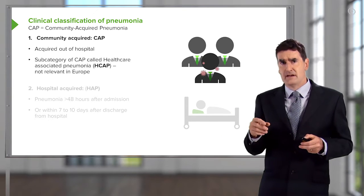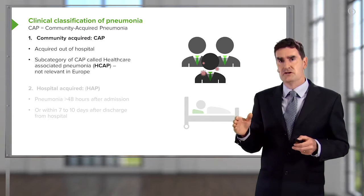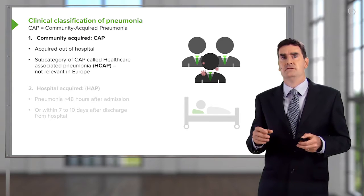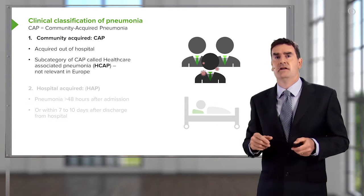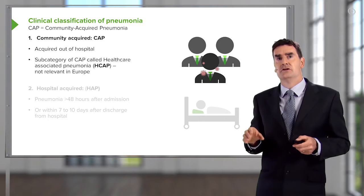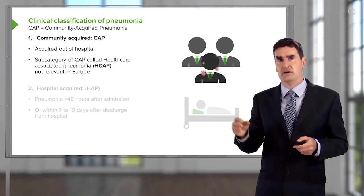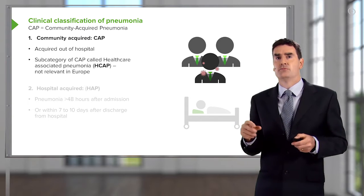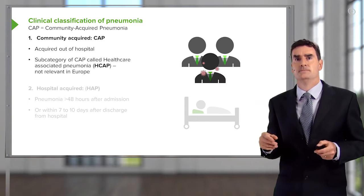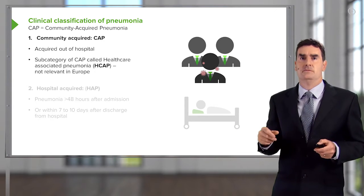There's a subcategory of community-acquired pneumonia called healthcare-associated pneumonia, which has been defined recently in America but is probably not relevant in Europe. That is a pneumonia that occurs in people who are in long-term care facilities and nursing homes. In Europe it's probably not that much different to normal community-acquired pneumonia, so we group it with community-acquired pneumonia.